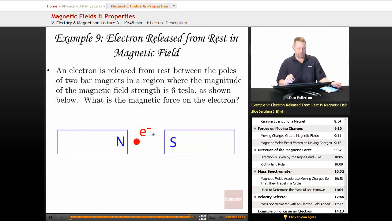Alright, last question. An electron released from rest in a magnetic field. An electron is released from rest between the poles of two bar magnets in a region where the magnitude of the magnetic field strength is six tesla, as shown below. So, what's the magnetic force on the electron?